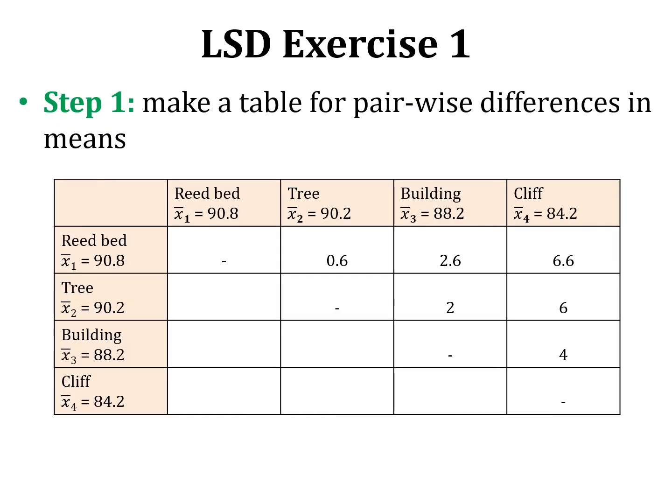In step one, we make a table for pairwise differences in means. Reed bed and tree: means 90.8 and 90.2, difference 0.6. Reed bed and building: means 90.8 and 88.2, difference 2.6. Reed bed and cliff: means 90.8 and 84.2, difference 6.6. Tree and building: difference 2. Tree and cliff: means 90.2 and 84.2, difference 6. Building and cliff: means 88.2 and 84.2, difference 4.